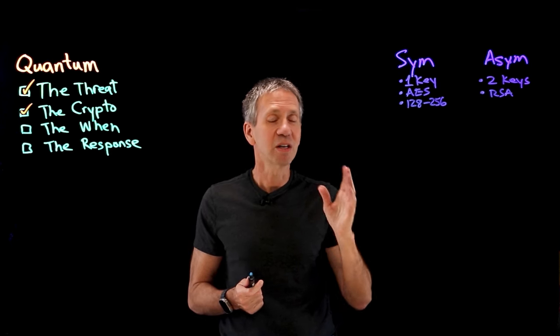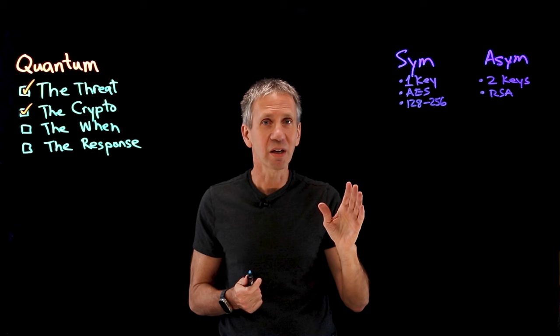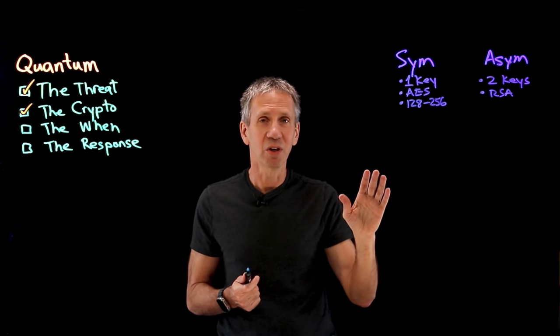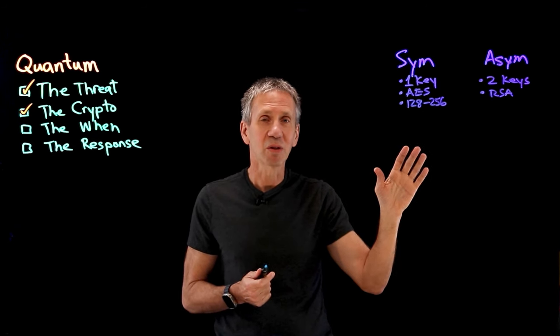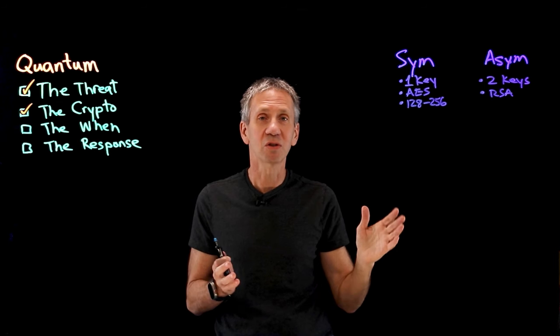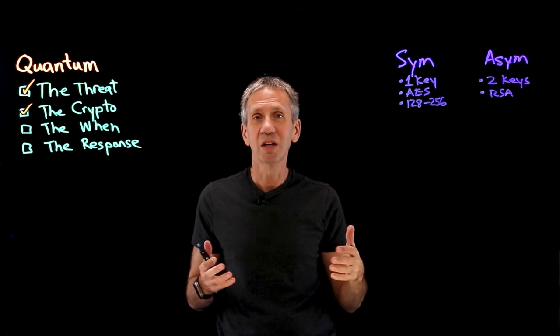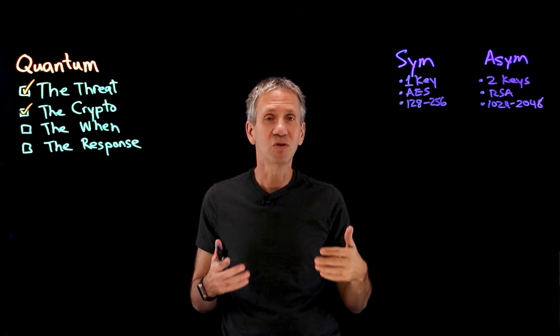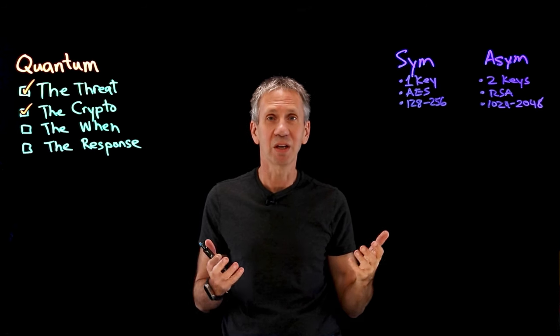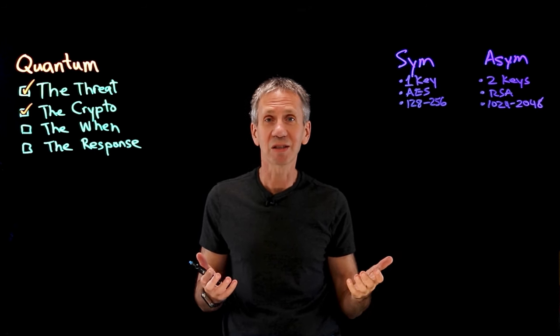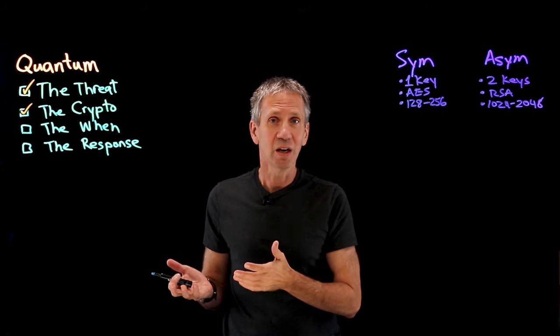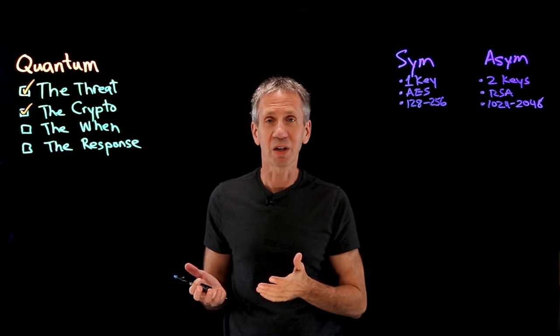Now what's different here is the algorithms operate differently and the math behind them is different. The key lengths for asymmetric algorithms tend to be much longer. For instance, RSA, we're typically using 1024 to 2048 bits in length. So really 10x the size of the keys that we were using for symmetric algorithms.